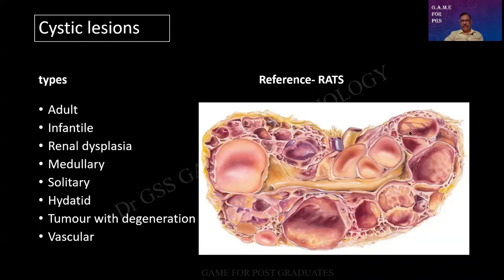Cystic diseases of the kidney. You may be given a specimen of polycystic kidney. It can be part of an assembled autopsy. But then they can ask you, what are all the various other cystic diseases? Kindly have the entire list. Your Robbins gives a beautiful tabular column. And you people should be able to at least mention the different types. Do not forget that there can be parasitic cysts such as the hydatid cyst. There can be tumor with cystic degeneration. Or there can be vascular lesions also.